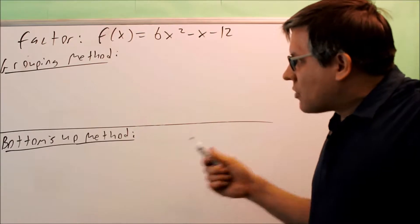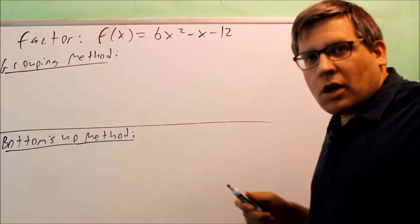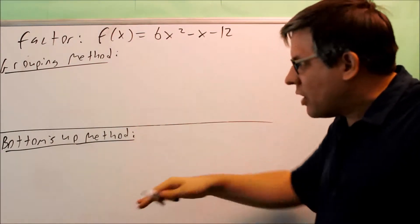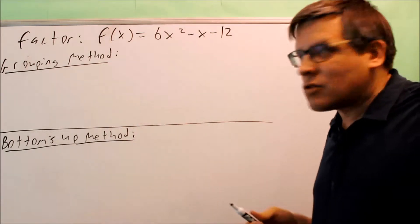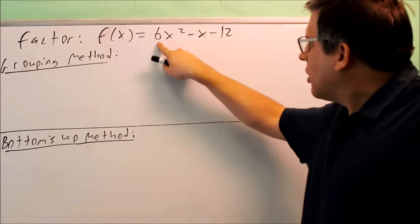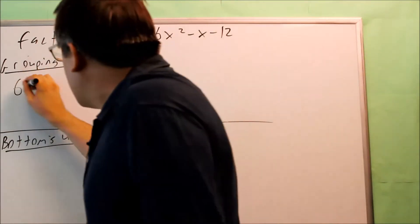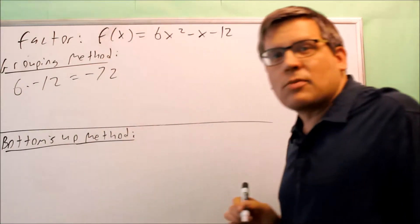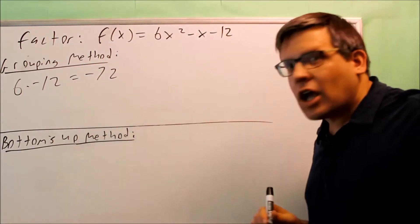The first one I'm going to start with is a grouping method, and so I'm going to actually factor this one by using both these methods. We should, of course, come up with the same answer, so I'll show you a grouping method first. What you're going to do is you take the first number and you're going to multiply it by the last number. So you get 6 times negative 12 equals negative 72.